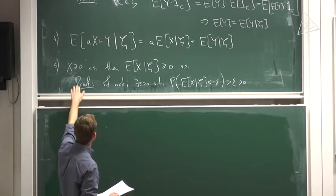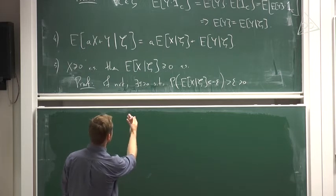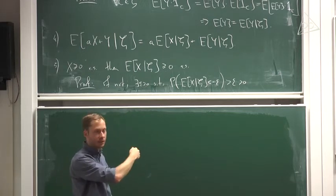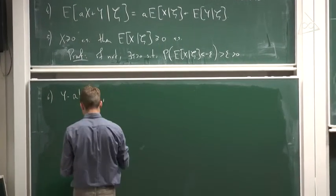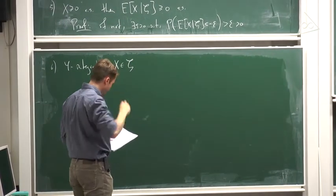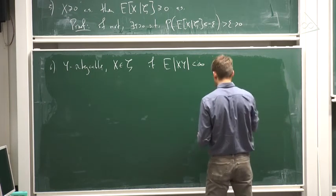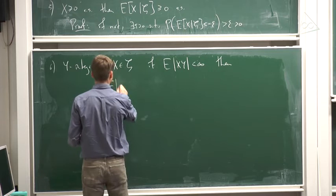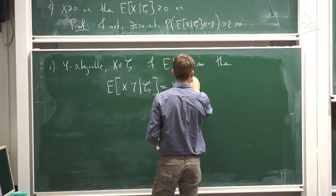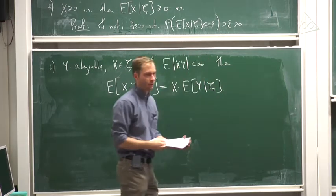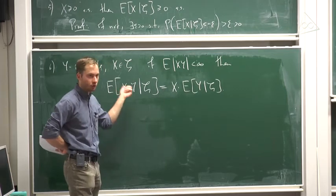Even more is true than just linearity: instead of a constant, we can take some random variable. If it is measurable with respect to 𝒢, it can be taken out from the expectation like a constant. Property 6: let Y be integrable and X be 𝒢-measurable. Then if X·Y is also integrable, then E[X·Y | 𝒢] = X · E[Y|𝒢]. If we have a random variable which is 𝒢-measurable, then it can be taken out like a constant in the usual expectation.